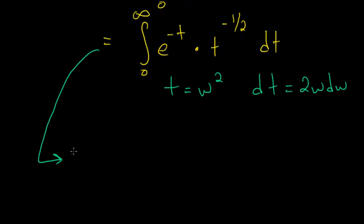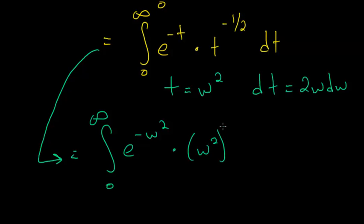So this is now equal to the integral from zero to infinity, since the bounds won't change, e to the minus w squared times w squared to the minus one-half. And then dt is this here, so two w dw.